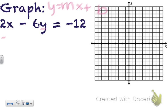And I'm going to be left with negative 6y equals negative 2x minus 12. I'm going to divide both sides by negative 6.